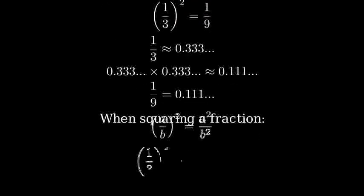Remember, when you square a fraction, you multiply both the numerator and denominator by themselves. This is why one-third squared equals one-ninth.